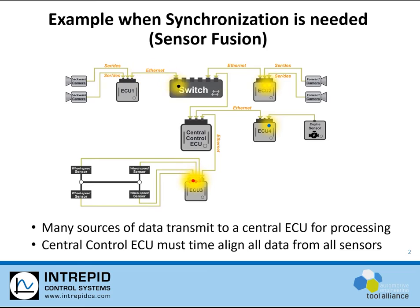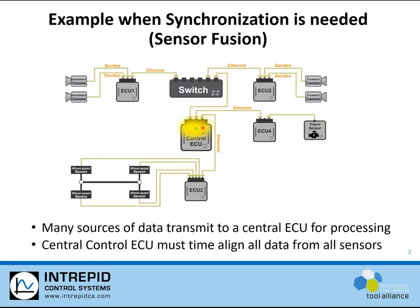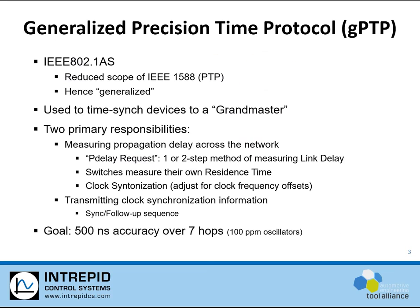GPTP, or Generalized Precision Time Protocol, can be used to synchronize the clocks of all the nodes throughout a network. One node is selected as a grandmaster, and that node's clock will be used — all other nodes on the network will synchronize to that clock.